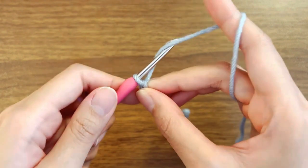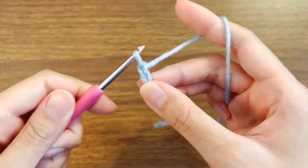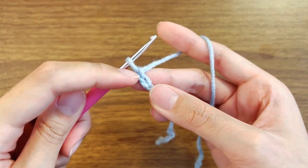Okay, repeat again: yarn over hook and then pull through. That's the second chain.